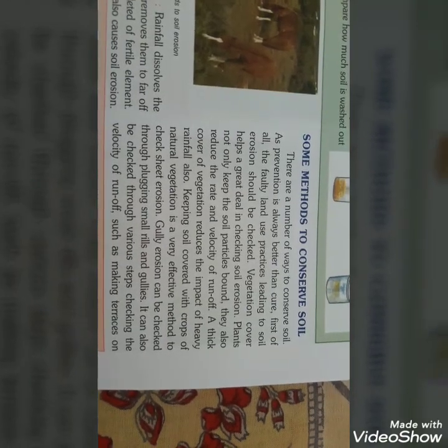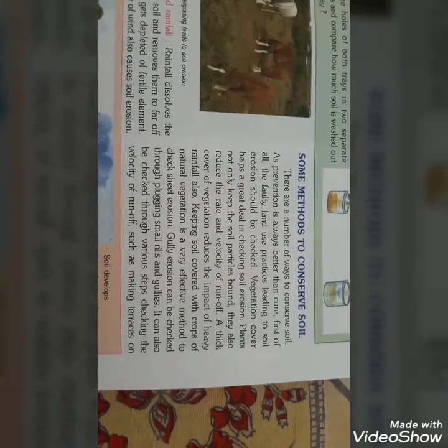Some methods to conserve soil — बहुत सारे methods से हम soil को conserve कर सकते हैं। ऐसी faulty land practices हमें नहीं use करनी चाहिए जिसकी वजह से soil erosion बढ़े। Plants ना सिर्फ soil को बहने से रोकते हैं बल्कि मिट्टी को उड़ने से भी रोकते हैं। ज़्यादा से ज़्यादा soil अगर crops, grass या natural vegetation से ढकी रहेगी तो soil erosion कम होगा।